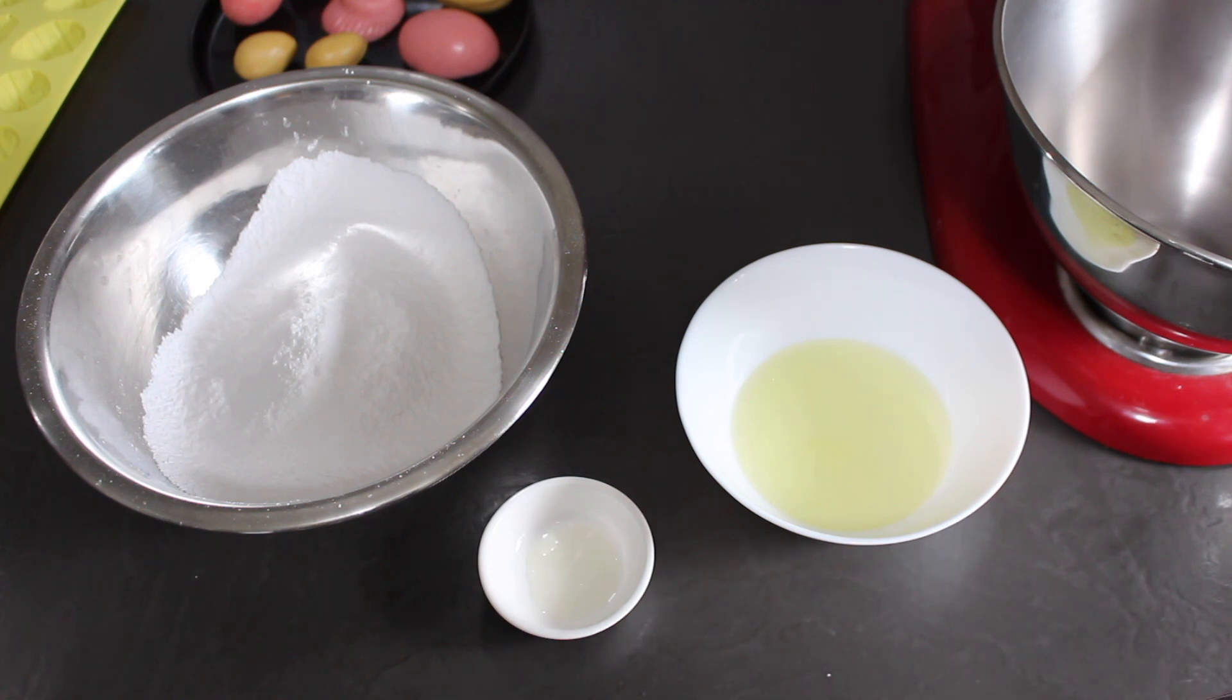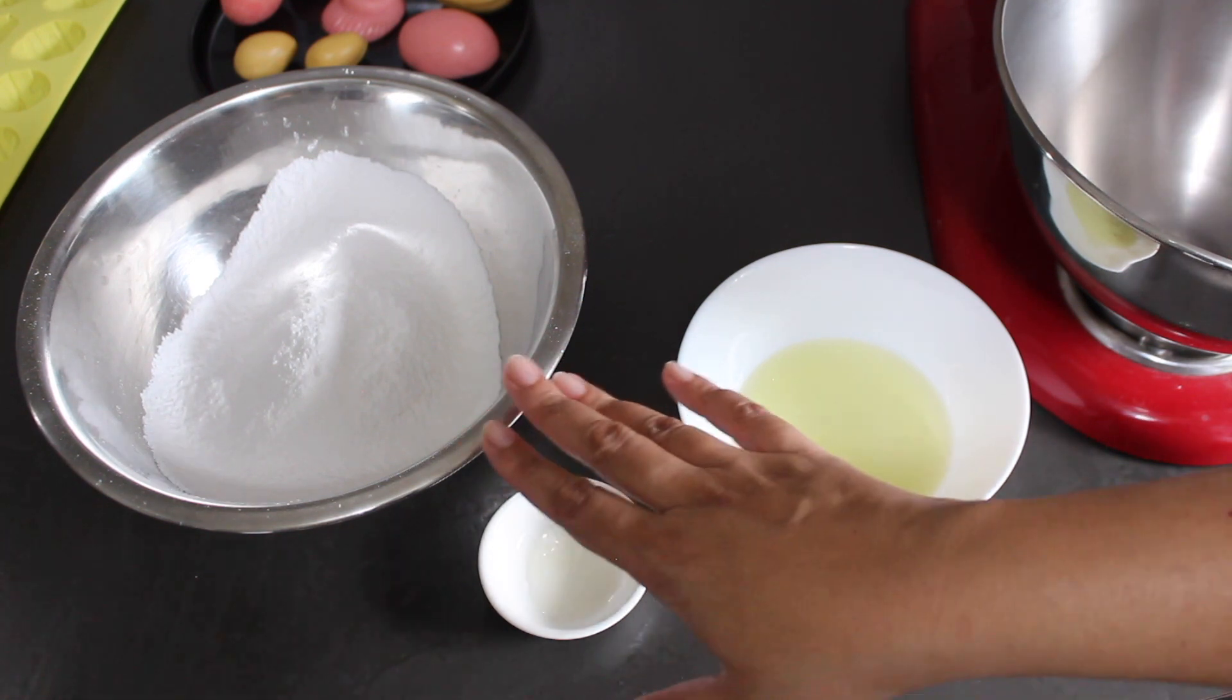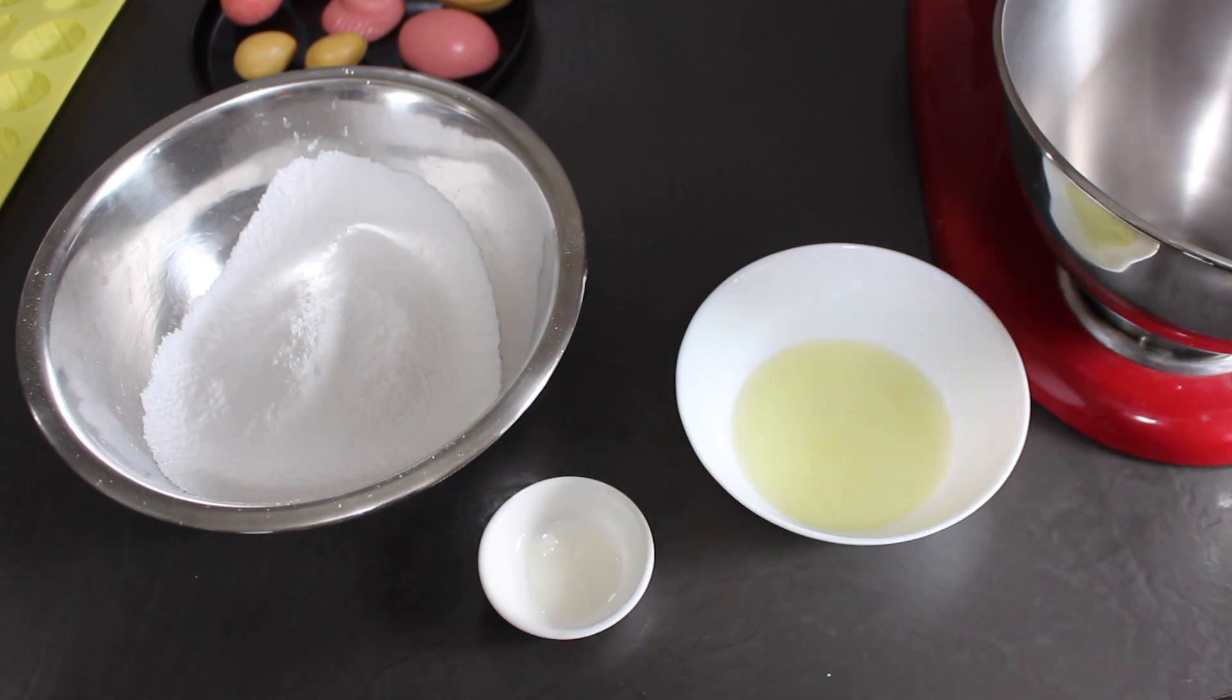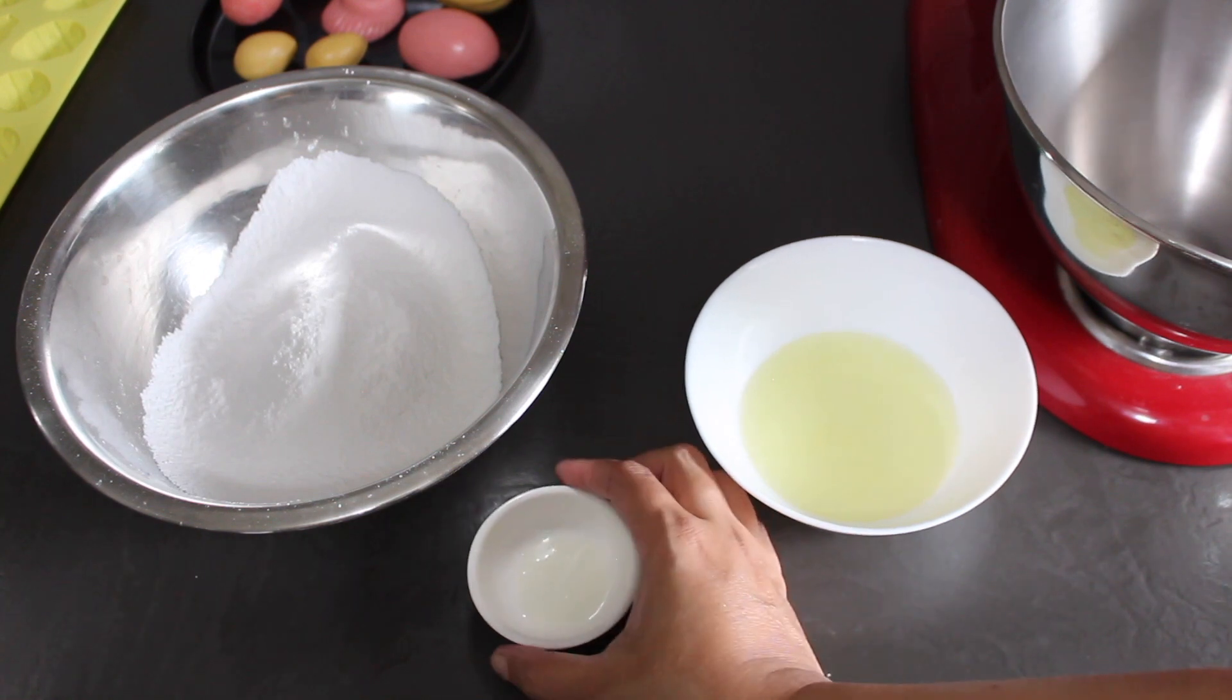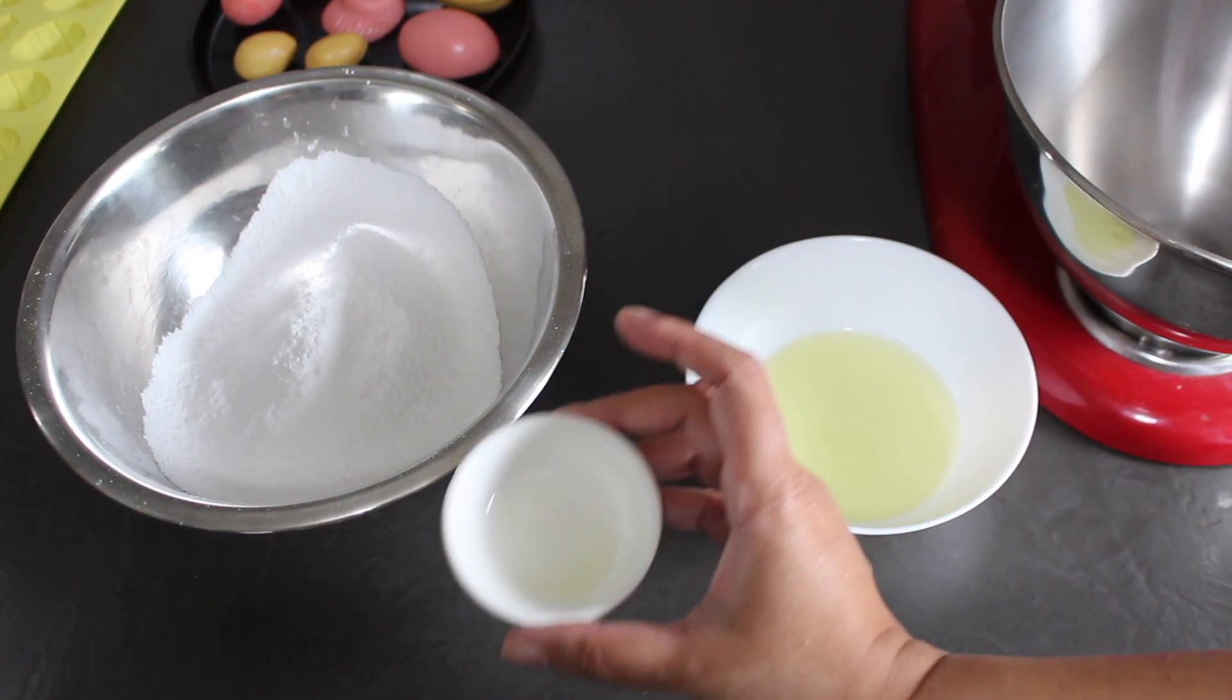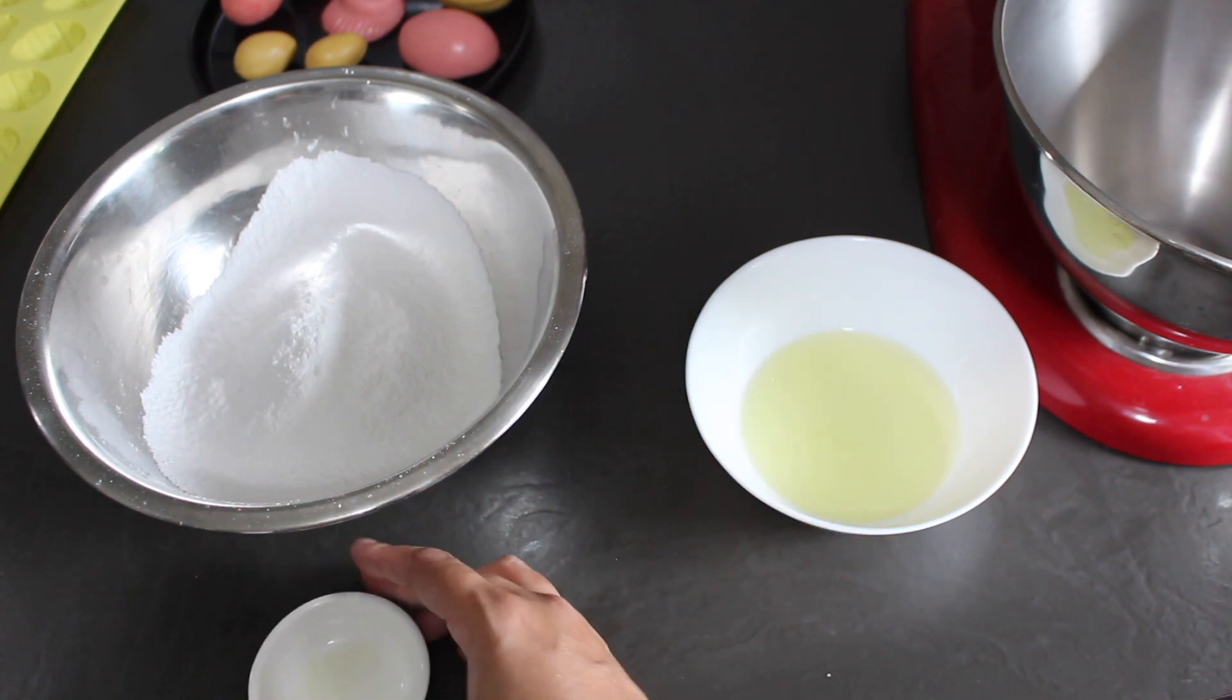It all depends on the temperature, the humidity in the air, the size of your egg white, and a number of factors, so I really can't give you an exact quantity. You have to go by the texture and the feel of the icing, like I'll show you in a bit. And over here I've got the tiniest bit of lime juice, about half a teaspoon's worth.